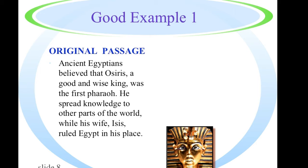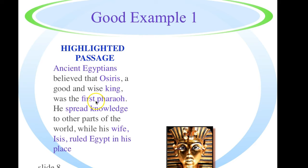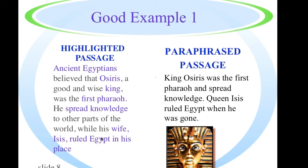In a good example of highlighting, you might see something like this. Ancient Egyptians, Osiris, King, First Pharaoh, spread knowledge, wife Isis, ruled Egypt in his place. Captured all of the key ideas that were in that passage. So then you're ready to create a paraphrase based on the amount of information that you highlighted. And it might read something like this, King Osiris was the first Pharaoh and spread knowledge. Queen Isis ruled Egypt when he was gone. So it's a much simpler version of what we read in the text, but it captures all the main ideas.